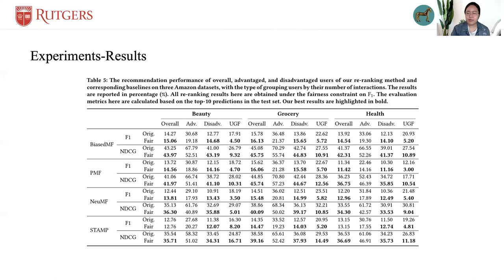The difference of NDCG@10 between two groups is 32%, and the difference of F1@10 between two groups is 24%. Such disparity could be caused by the advantaged users dominating the learning algorithm,